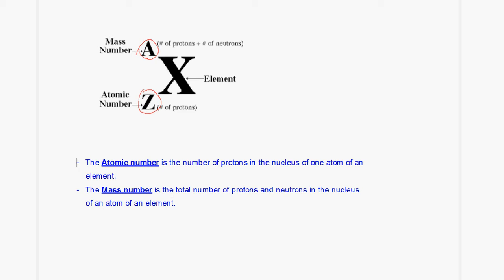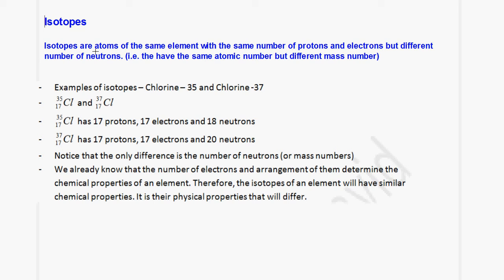Now we will look at something called an isotope. Isotopes are atoms of the same element with the same number of protons and electrons but a different number of neutrons. They have the same atomic number but different mass number. Since the atomic number — or the number of electrons — determines chemical properties, isotopes have similar chemical properties but different physical properties.